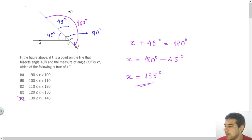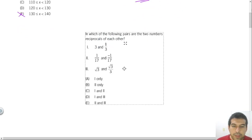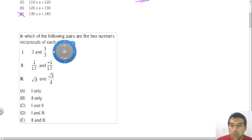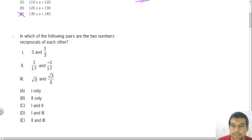Let's go to the second question. In the second question, we need to find out which pairs of numbers are reciprocals. Remember that two numbers are reciprocals if the product of the numbers is equal to one.